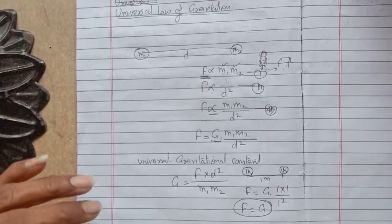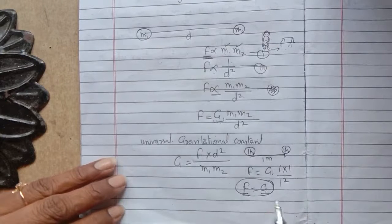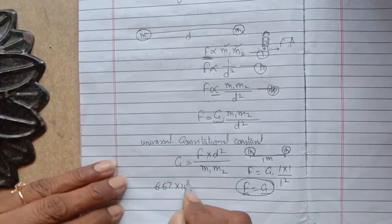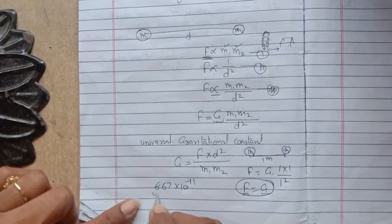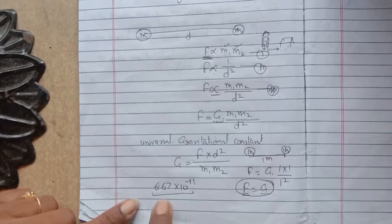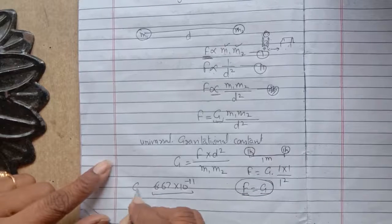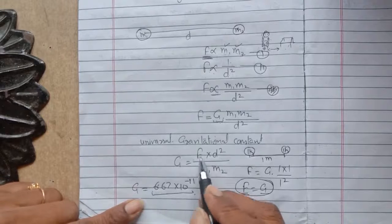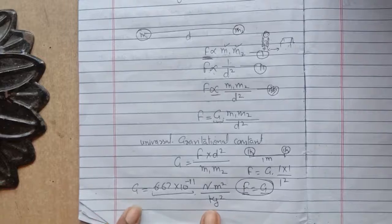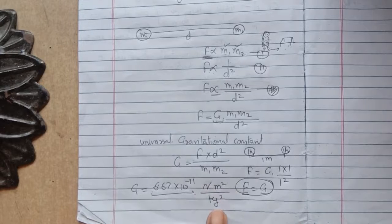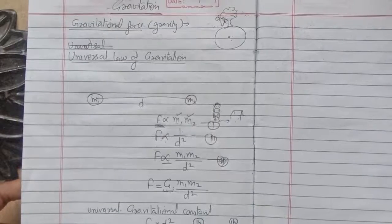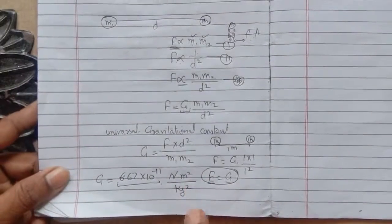This is the force exerted between two objects each having a mass of 1 kg placed at a distance of 1 meter from each other. So this force equals G. What is the unit of G? The unit of force is Newton, distance is in meter squared, and mass is in kg squared. So the SI unit of the universal gravitational constant is Newton meter square per kg square. This is all about the universal law of gravitation.